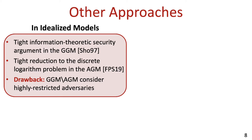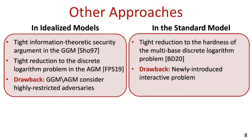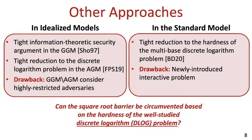Though tight, the drawback of these two results is that both the generic group model and the algebraic group model consider highly restricted classes of adversaries. In the standard model, Bellare and Dai recently presented a tight reduction from the security of the Schnorr ID scheme, not to the D-log problem, but to a new problem which they introduced called the multi-base discrete logarithm problem. The drawback of this approach, of course, is that it assumes the hardness of a newly introduced interactive problem rather than the standard D-log problem. Thus, a pressing question is how inherent is the square root loss when trying to reduce the security of Schnorr's schemes to the hardness of the well-studied D-log problem in the standard model, or in other words, can the square root barrier be circumvented based on the hardness of the D-log problem?